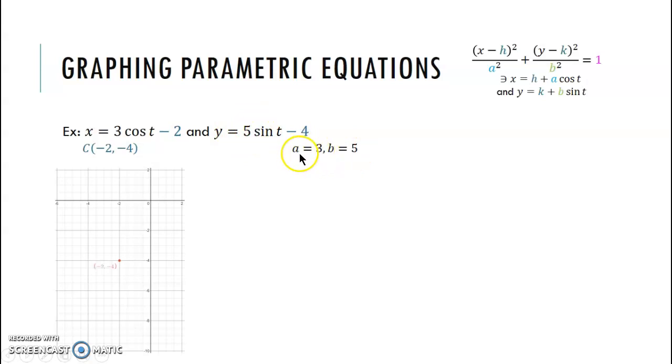So that means this is my horizontal radius, three. This is my vertical radius, five. So I start at my center at negative two, negative four. Now, for my horizontal radius, I'm going to count three to the right and three to the left.